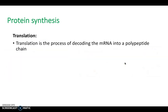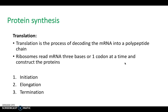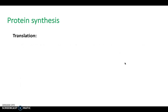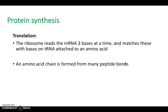That brings us on to translation, the next step. Translation is the process of decoding the mRNA into a polypeptide chain — in other words, into a protein. Ribosomes read the mRNA three bases, or codon, at a time and construct the protein. This is broken down into initiation, elongation, and termination. Three mRNA bases is the same as a codon, and this matches them with tRNA attached to an amino acid. An amino acid chain then forms from many peptide bonds.